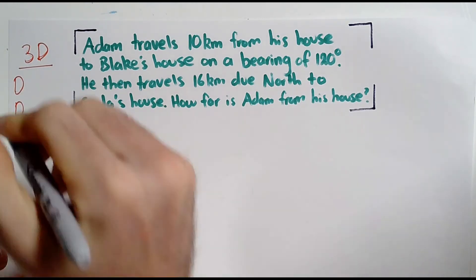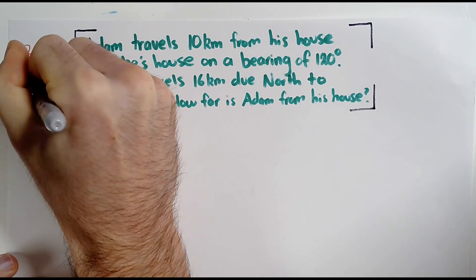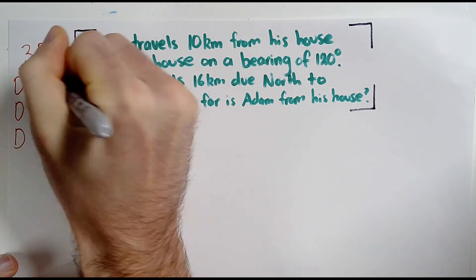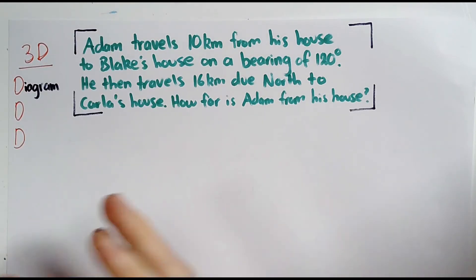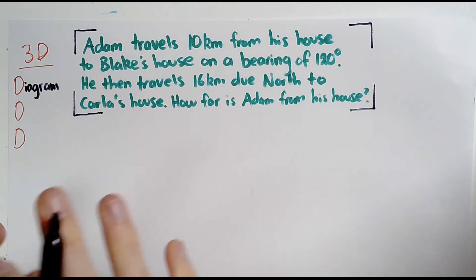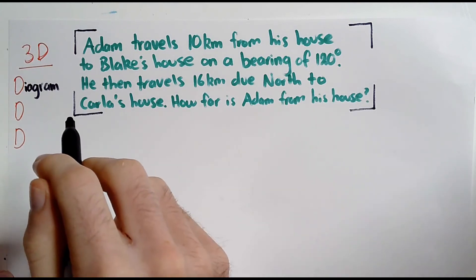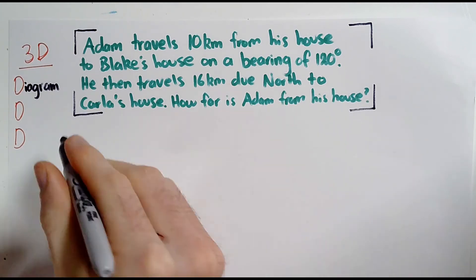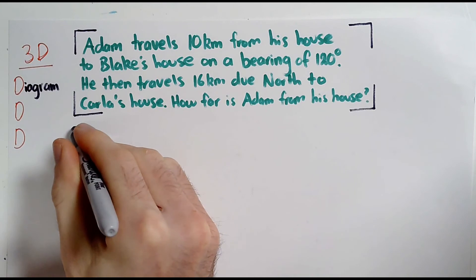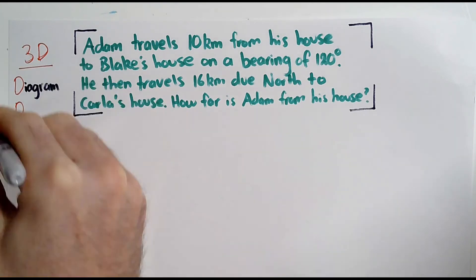The first D means diagram. So remember, when you do any bearings question, you always draw a big diagram showing all of the details, exaggerating the size of the angles so that you don't end up cramming all of the numbers in and getting confused. And you make sure that when you start drawing the diagram, when you draw the first point, you don't do it in the corner of the page because then you might run out of room in that section.